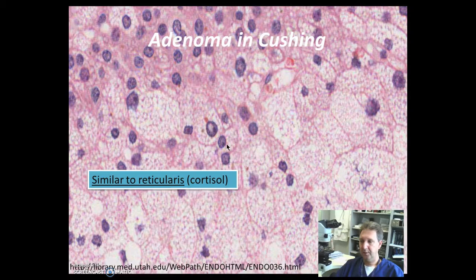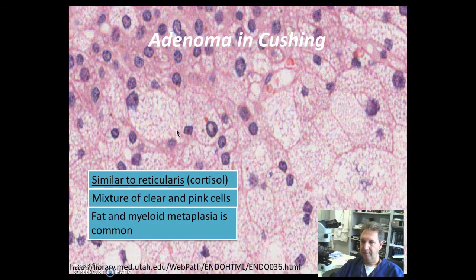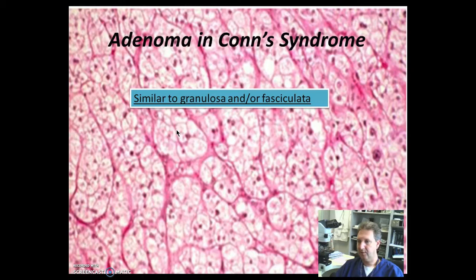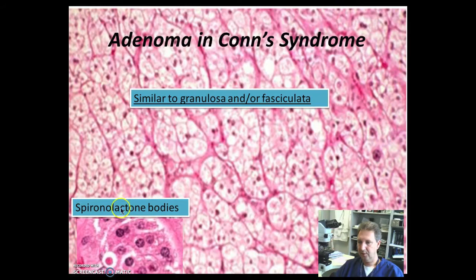Sections will show that cortical adenomas are composed of large cells with distinct cell borders, foamy cytoplasm, and there's nuclear variation. There are also histologic variants such as the oncocytic variant and myxoid variant. Necrosis and atypia can be seen in kids. There is a mixture of clear and pink cells; the pink cells and more clear cells are full of fat. Fat and myeloid metaplasia is common. The adenomas in Cushing syndrome are usually small, less than two centimeters in size, with a yellow cut surface, and sections show cells similar to granulosa or fasciculata. Since patients are treated with spironolactone because of the hypertension, it's not uncommon to see spironolactone bodies, which are eosinophilic intracytoplasmic inclusions.